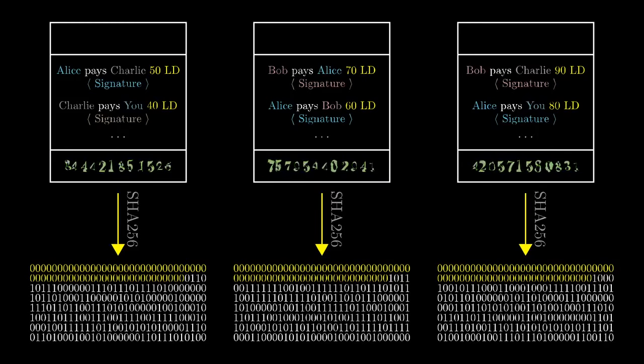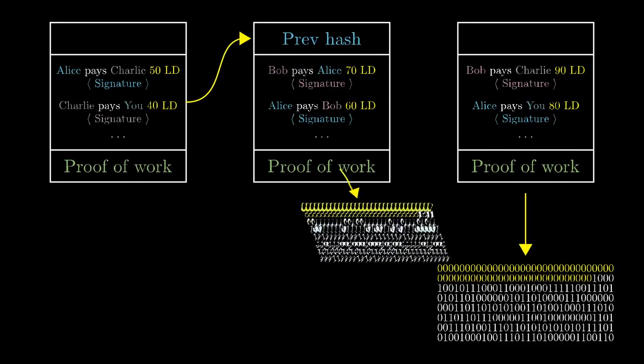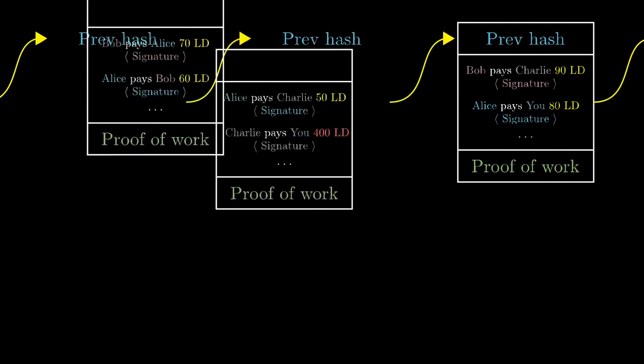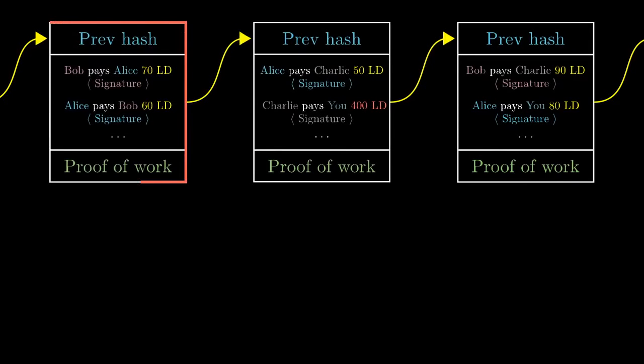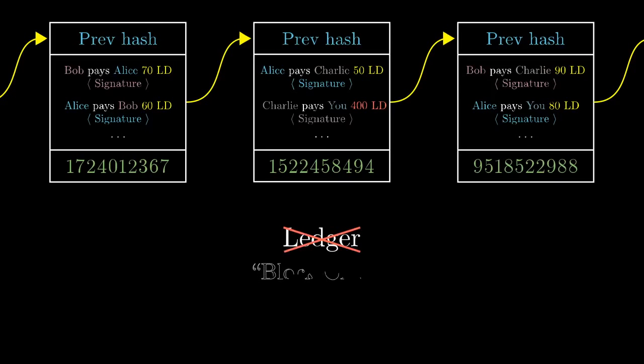And also, to make sure that there's a standard order to these blocks, we'll make it so that a block has to contain the hash of the previous block at its header. That way, if you were to go back and change any one of the blocks, or to swap the order of two blocks, it would change the block that comes after it, which changes that block's hash, which changes the one that comes after it, and so on. That would require redoing all of the work, finding a new special number for each of these blocks that makes their hashes start with 60 zeros. Because blocks are chained together like this, instead of calling it a ledger, it's common to call it a blockchain.